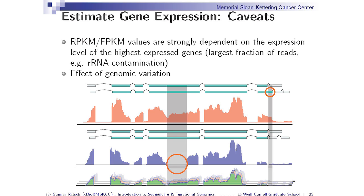A read is a short sequence — maybe 100 nucleotides long — a small fragment generated in this biochemical process, randomly sampled from the RNA or DNA sequences. Longer reads are better mostly because you can more accurately align them: a 20-nucleotide sequence matches to many places in the genome, sometimes thousands. With 100 nucleotides you can map about 90% of reads uniquely; with 150 nucleotides maybe 95%. To get to 100% you really need very long reads.